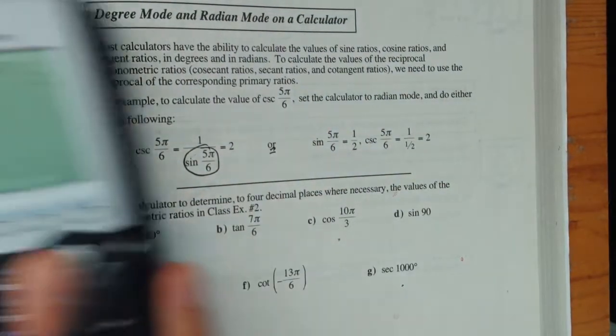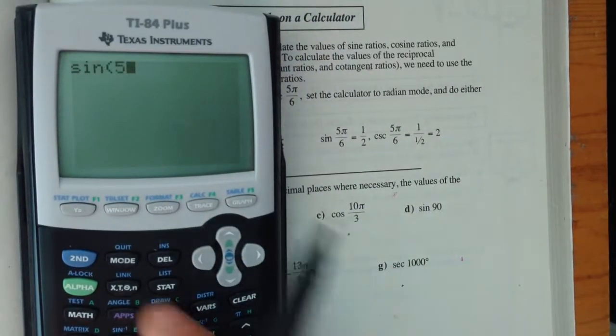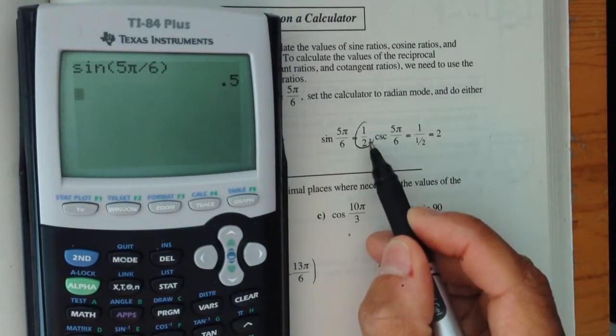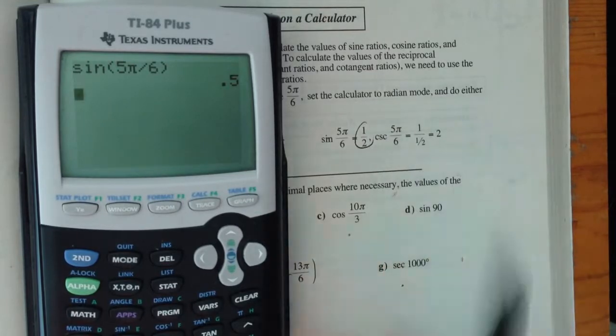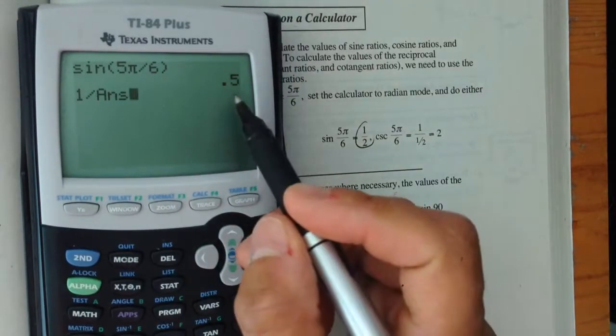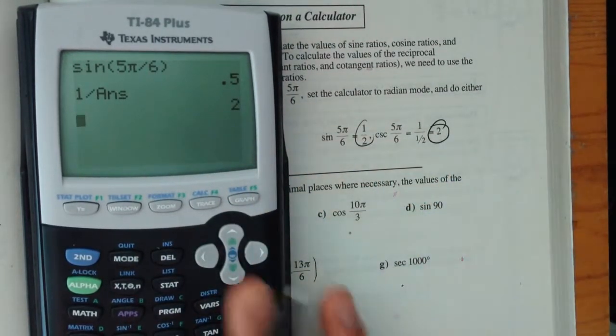And you get your answer of 2. Another way you can do it is, first find out what sine 5π over 6 is equal to, 0.5 or 1 half, and then just go 1 over that answer, 1 over 0.5, and you get the same answer of 2.